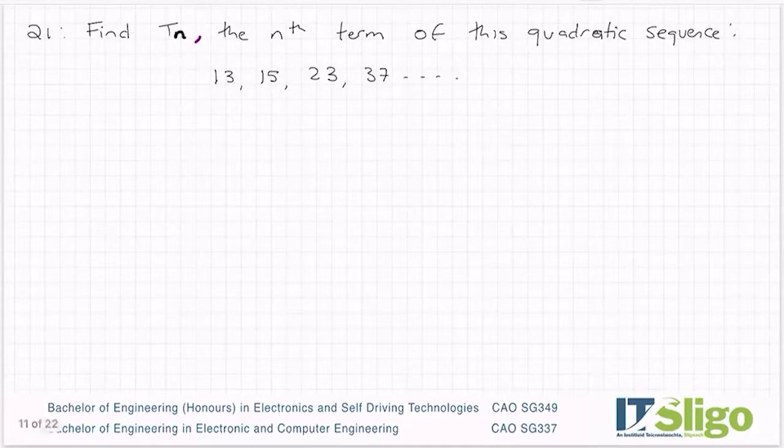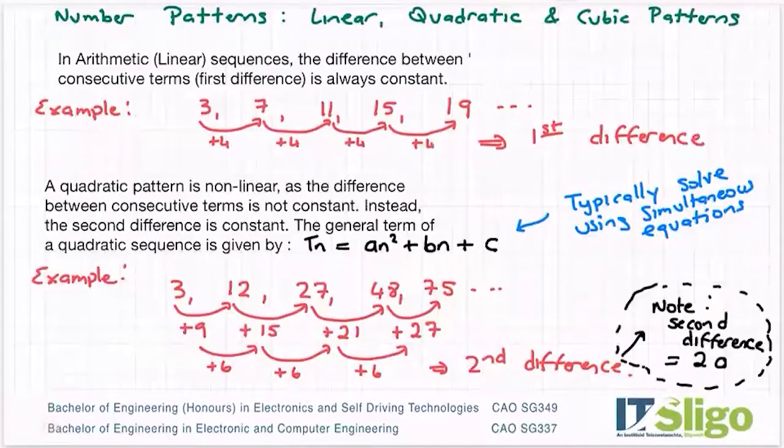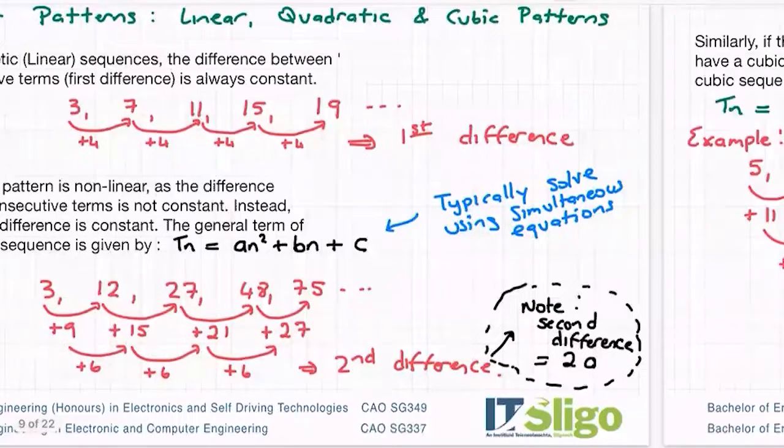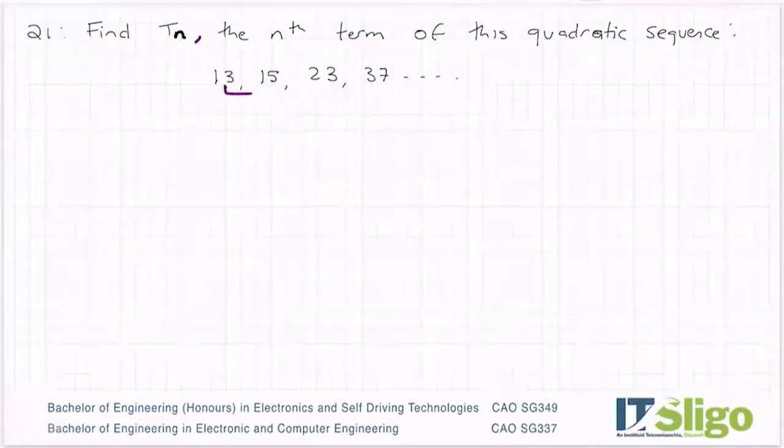So we know from the theory that we just did of a quadratic sequence that we would expect the second difference to be the same, and that the second difference is equal to 2a. So the first thing I'm going to do is to check that second difference.